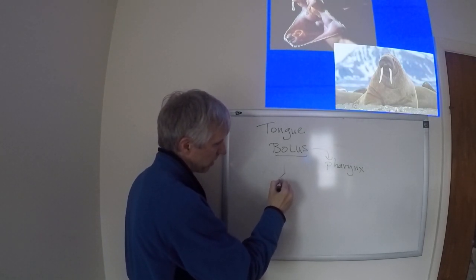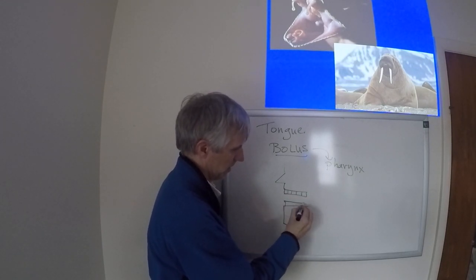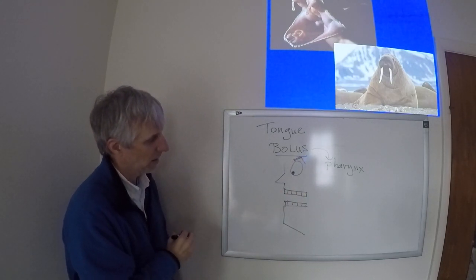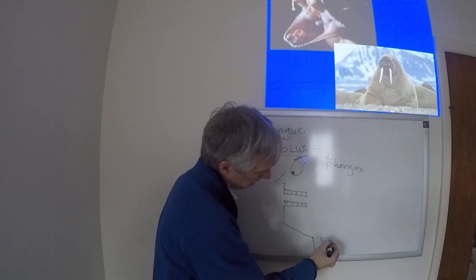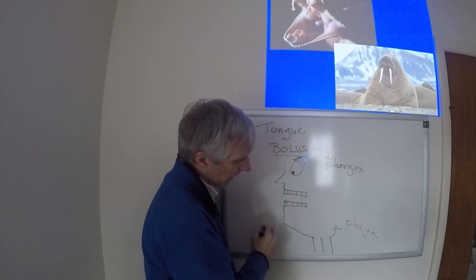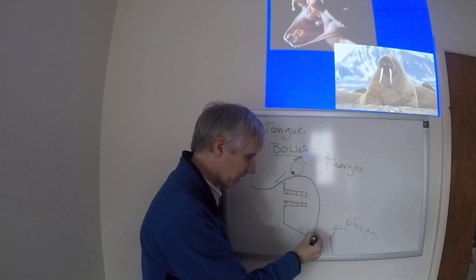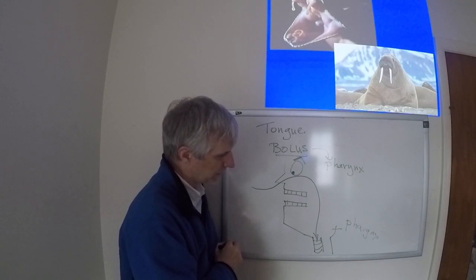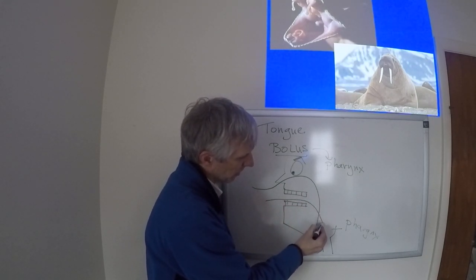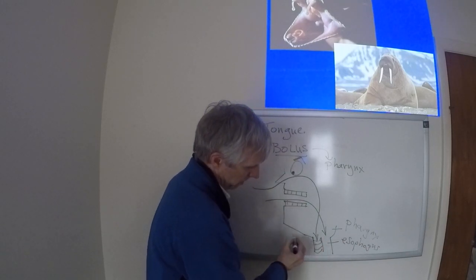I've moved food back into here, which is the pharynx. We know from the respiratory system that air tends to come in through the nose, it's going to enter into the pharynx and move down into the trachea. When the tongue takes the bolus, it's pushing it back towards the pharynx and pushing things towards the esophagus.